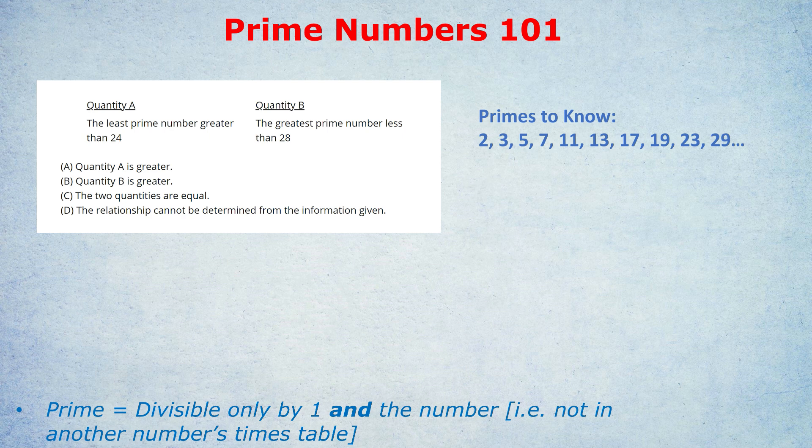Using this fact, let's do this real ETS GRE official question. Can you tell me what is bigger? Quantity A: the least prime number greater than 24, or Quantity B: the greatest prime number less than 28? Those students who've memorized the prime numbers on the right can see that the smallest prime number bigger than 24 is 29. The greatest prime number less than 28 is 23. So Quantity A is bigger than Quantity B.